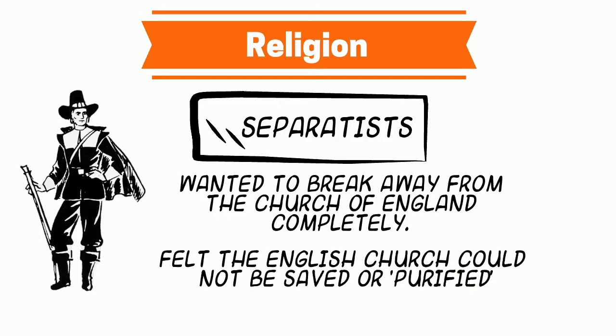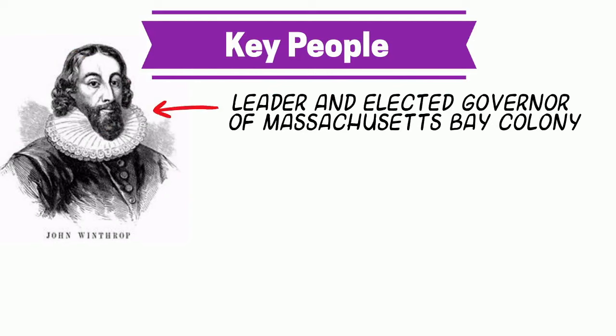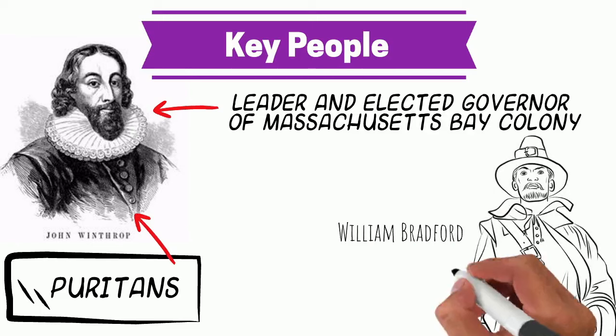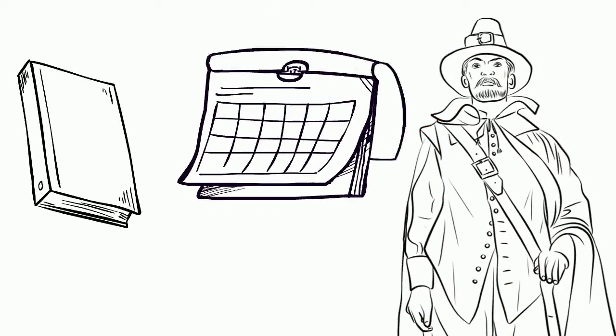There are a couple of key people we need to pay attention to in this region. The first is John Winthrop, and he was the leader and elected governor of the Massachusetts Bay Colony, which was the Puritan stronghold of that area. The other notable person is William Bradford, and he was the governor of Plymouth Colony, the leader of the Separatists — the actual Pilgrims on the Mayflower. Bradford plays a very important role historically with his journal and recollection of things that happened in Plymouth Colony, including the story of Thanksgiving.